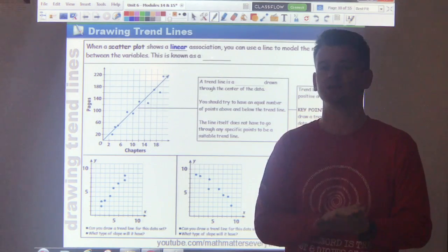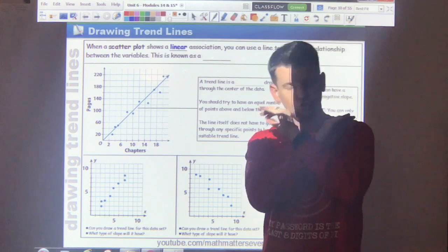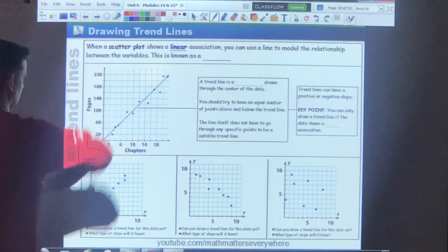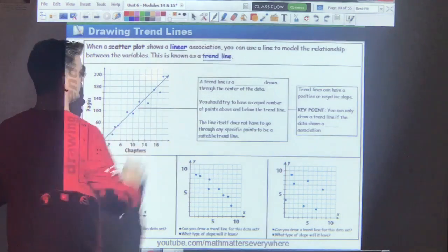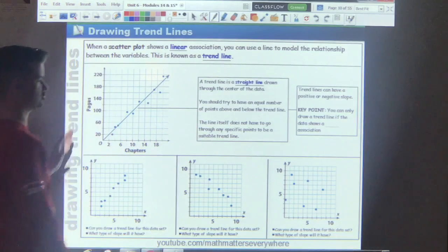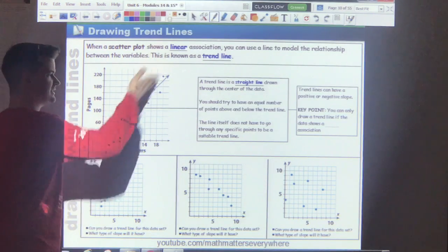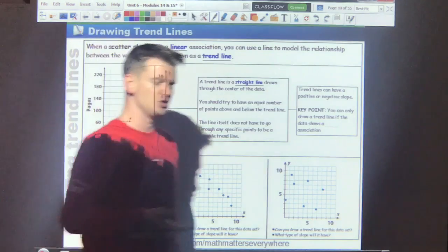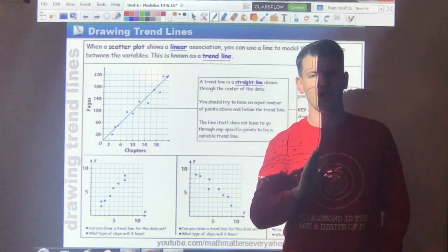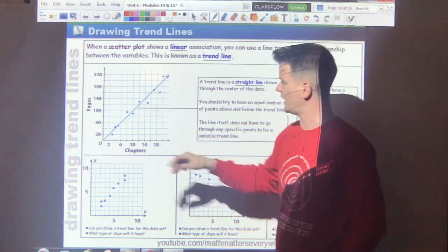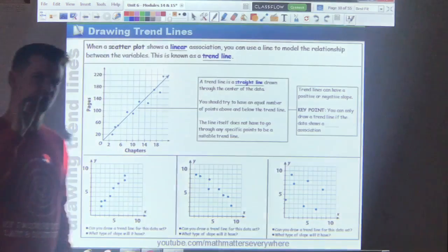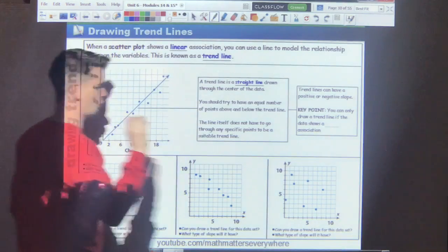If you have a non-linear association, you cannot draw a trend line. So here, linear association, trend line. A trend line is a straight line, like I said, that is drawn through the center of the data. You want to try to have the same number of points above and below the line. If you do, that's a good trend line. We look here, we have about four points above, four points below. That is a good trend line. Once again, remember,